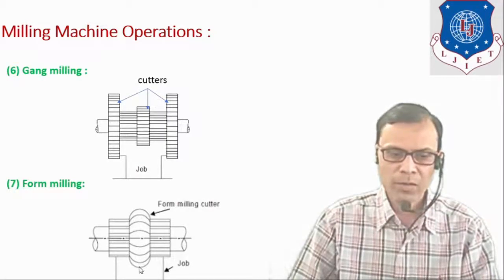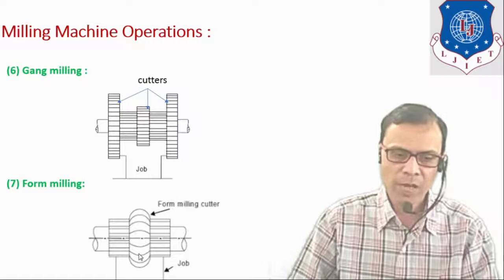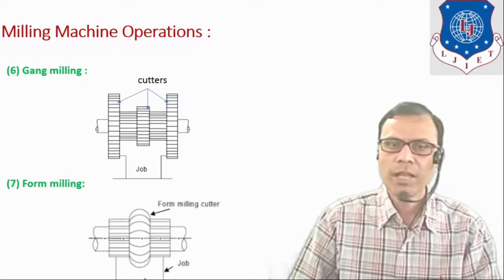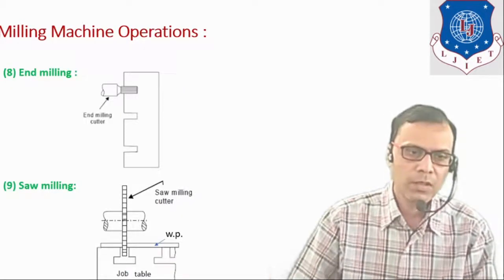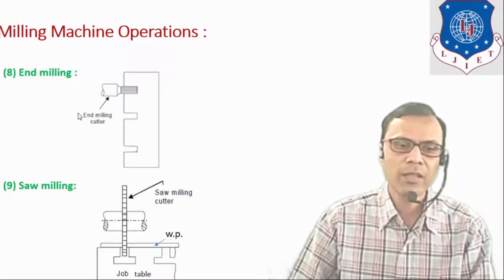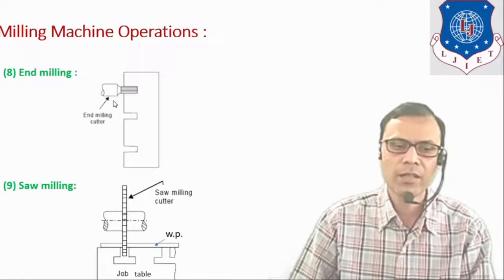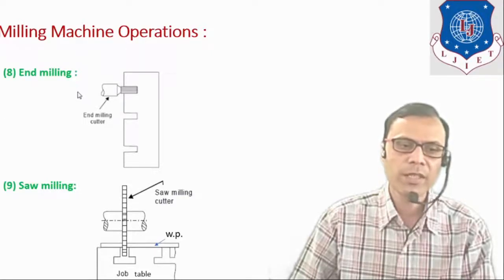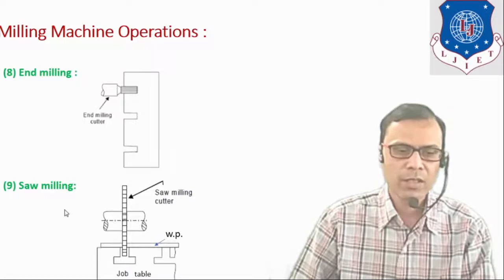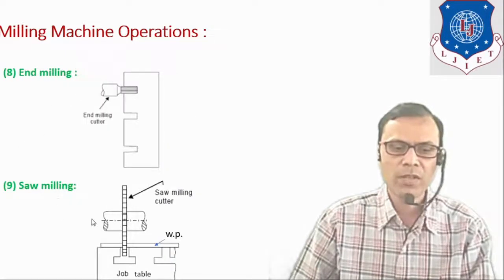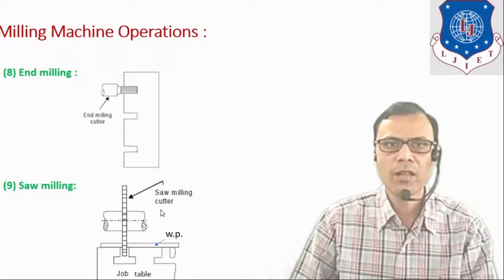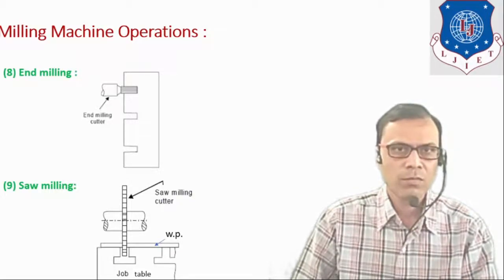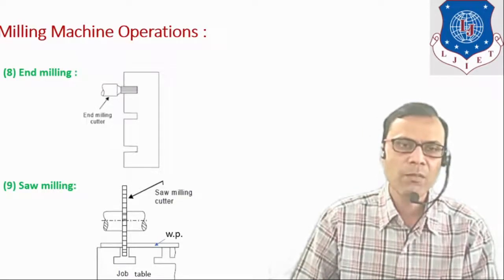In form milling operation, we can produce any required shape by using a form milling cutter. The same shape would be produced on the job and it can be checked by using a template. The next type of operation is end milling — the cutter used is known as an end milling cutter and we can produce a slot, either an open slot or a closed slot. In saw milling operation, the cutter used is known as a saw milling cutter, so we can cut a narrow or slit type of slot, or we can also completely part the workpiece by using saw milling operation.